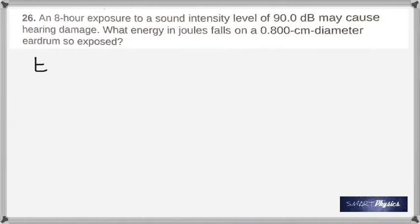The next one: An 8 hour exposure to a sound intensity level of 90 decibels may cause hearing damage. What energy in joules falls on a 0.8 centimeter diameter eardrum so exposed? The key is you're looking for energy here. And this is actually intensity. You know that intensity is power divided by area. Or rather, you can go this way. Energy is power multiplied by time. From the definition of power which is energy divided by time. Power is work divided by time. Work is nothing but energy. So energy is power multiplied by time. But yet, power is intensity times the area.